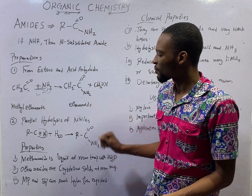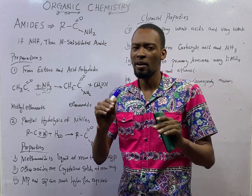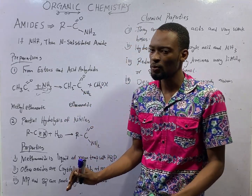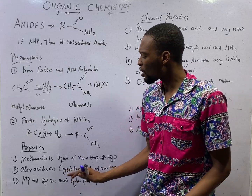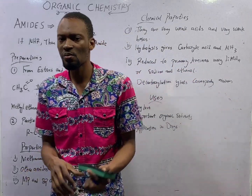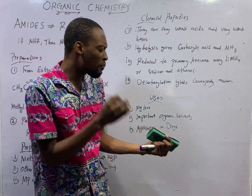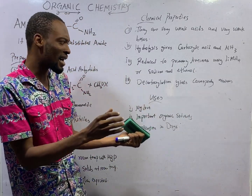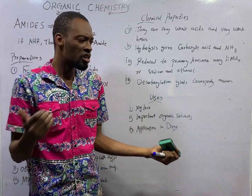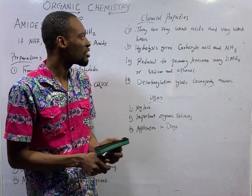The properties of amides are: the first member, methanamide, is liquid at low temperature, but other members are crystalline solids at low temperature. The boiling points and melting points of amides are higher than expected. This is as a result of hydrogen bonding.